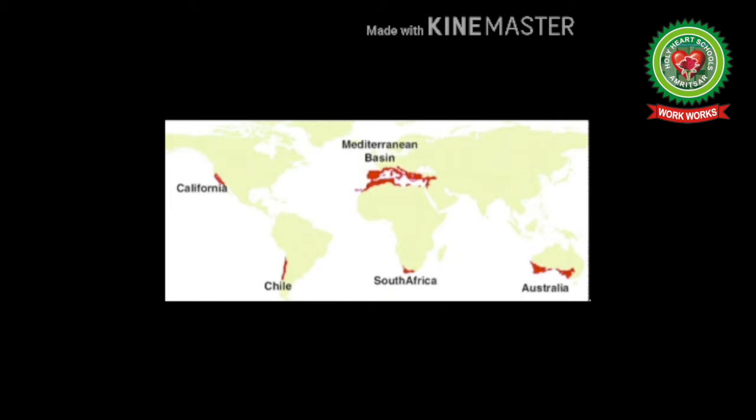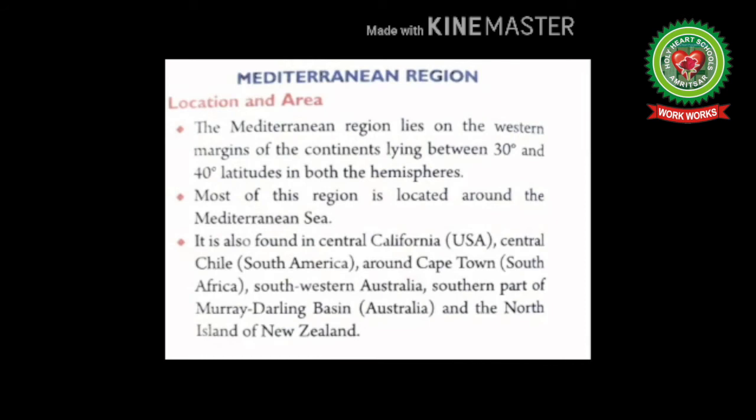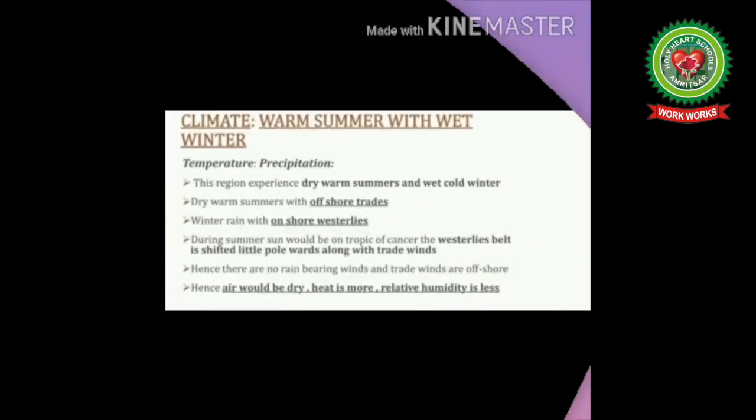Now let's do the book reading. Take out your page number 152. Mediterranean Region — Location and Area: The Mediterranean Region lies on the western margins of the continents, between 30 degrees and 40 degrees latitudes in both hemispheres. Most of this region is located around the Mediterranean Sea. It is also found in central California (USA), central Chile (South America), around Cape Town (South Africa), southwestern Australia, the southern part of the Murray-Darling Basin, and the North Island of New Zealand.